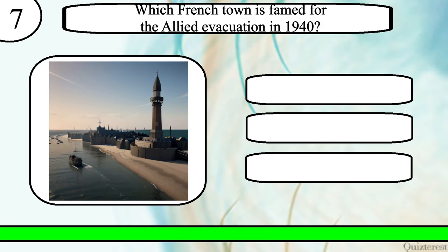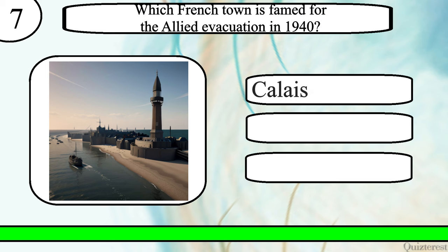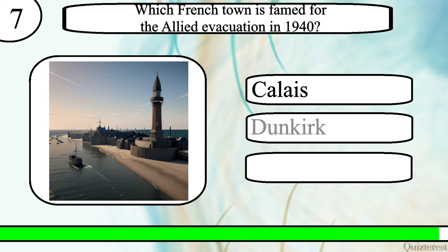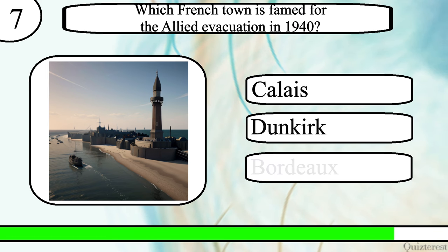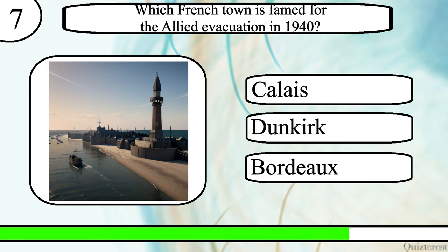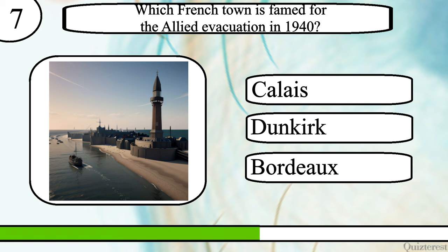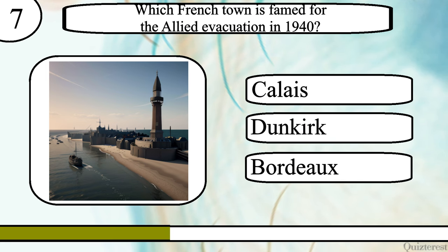Question 7. Which French town is famed for the Allied evacuation in 1940? Calais, Dunkirk, or Bordeaux?